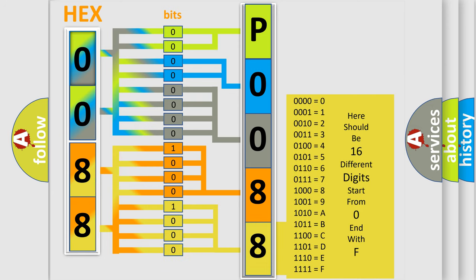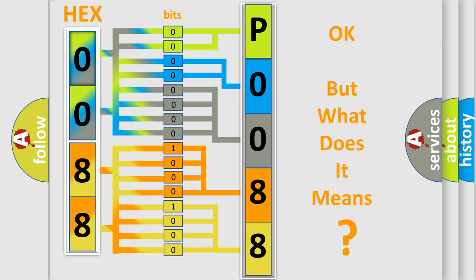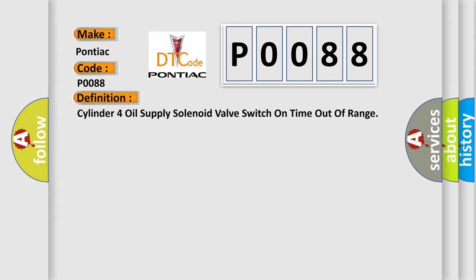We now know in what way the diagnostic tool translates the received information into a more comprehensible format. The number itself does not make sense if we cannot assign information about what it actually expresses. So, what does the Diagnostic Trouble Code P0088 interpret specifically for Pontiac car manufacturers? The basic definition is: Cylinder 4 oil supply solenoid valve switch on time out of range.